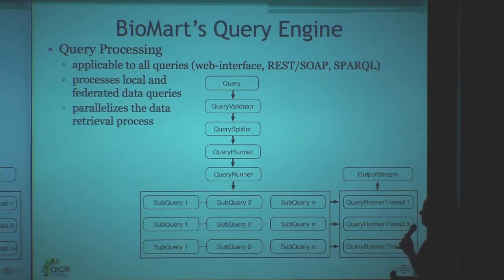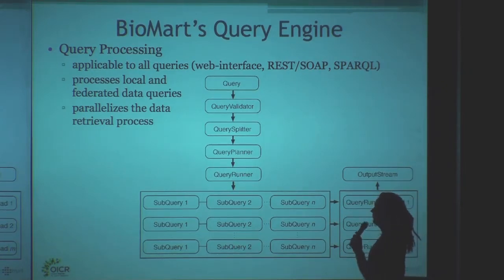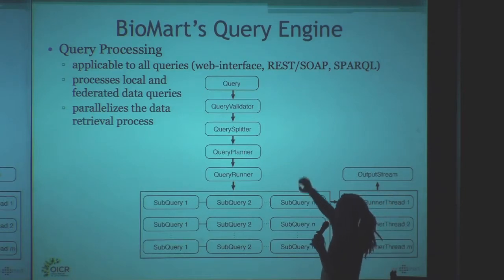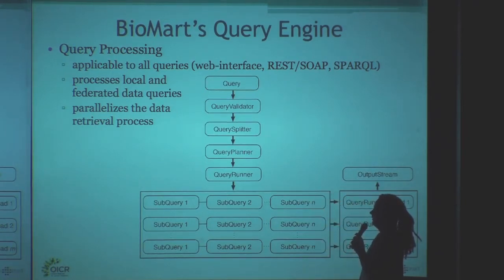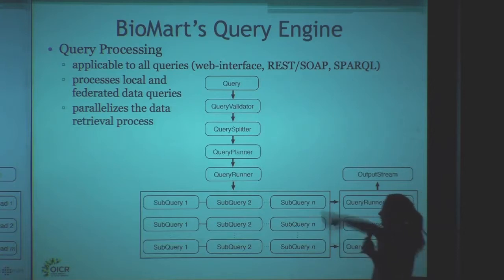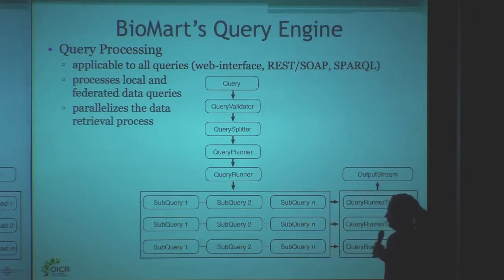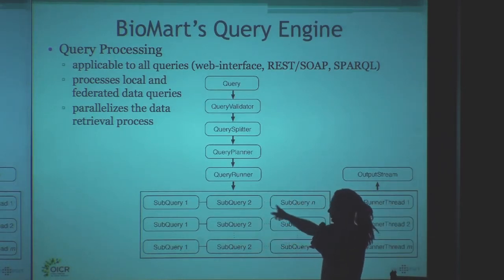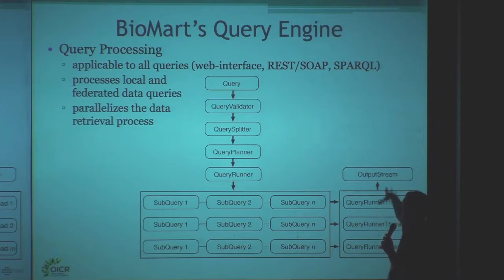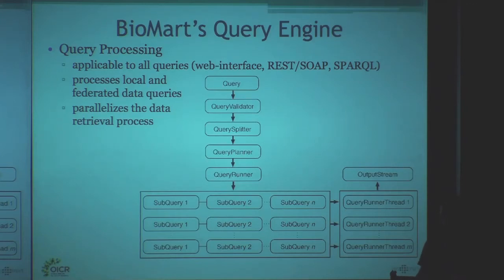Then we have BioMart's query engine, which does the second step of query optimization. This query engine is behind the web interface, but also behind all the programmatic interfaces. What it does basically is, after a couple of validation steps, it splits your query into sub-queries. These are not only executed in parallel, but also sequentially in a certain way so that when you join the data at the end, you get the data retrieval out of your databases. That's really important if you federate databases from remote sources — data which is not on your local server — this actually speeds things up quite a lot.